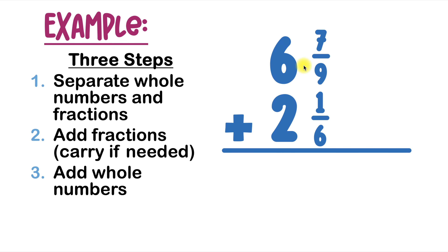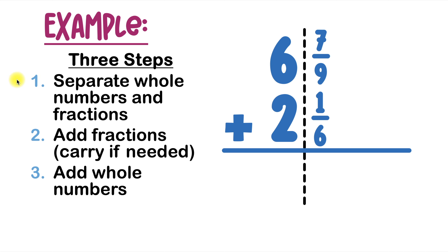Let's look at our next example. Here we've got 6 and 7 ninths plus 2 and 1 sixth. Step number one is to separate the whole numbers and the fractions, so I'll draw a dotted line to separate them. And now we're off to step two, which is to add our fractions — 7 ninths plus 1 sixth.